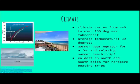Climate of the open ocean varies from negative 40 degrees to over 100 degrees Fahrenheit. The average temperature is 39 degrees. It is warmer near the equator, and coldest in the north and south poles.